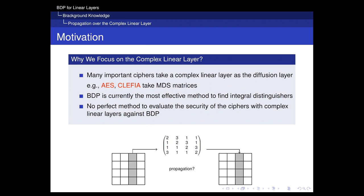We notice that many important ciphers take a complex linear layer as their diffusion layer. For example, AES and Cliffier take an MDS matrix as their diffusion component. Meanwhile, bit-based division property is currently the most effective method to find integral distinguishers. Unfortunately, there was no perfect method to evaluate the security of ciphers with complex linear layers against the bit-based division property, so we are interested in how to model the propagation of division trials over the complex linear layer perfectly.